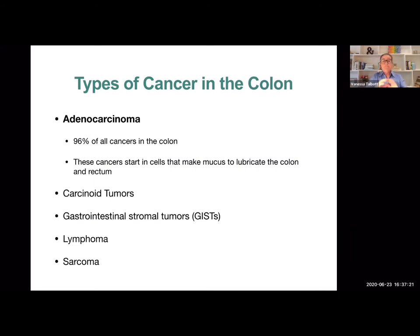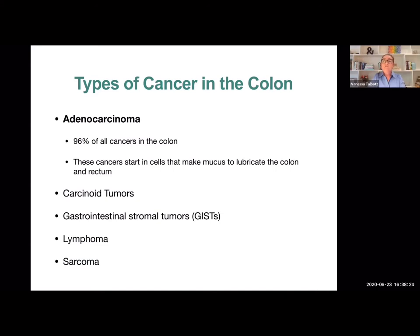Adenocarcinoma is by far the most common type of cancer in the colon or rectum — 96% of all colorectal cancers. These cancers start in cells that make the mucus that lubricates the colon and rectum. Less common types include carcinoid tumors, which start from special hormone-producing cells; gastrointestinal stromal tumors (GISTs), which develop from interstitial cells of Cajal and most commonly occur in the stomach and small intestine, though the rectum is the third most common site; and even rarer types include lymphomas and sarcomas.